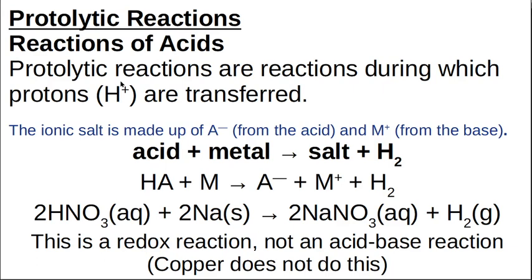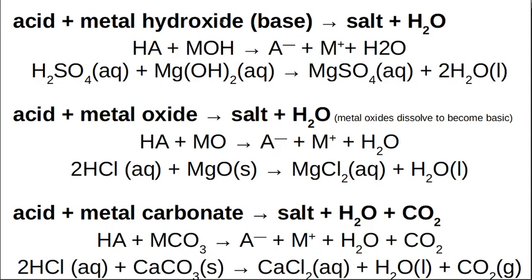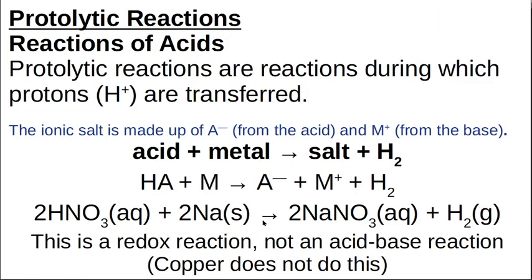These are the general reactions: an acid plus a metal gives you salt and hydrogen gas; an acid plus a metal hydroxide gives you a salt and water; an acid plus a metal oxide; acid plus a metal carbonate. These reactions have been discussed since grade nine, so you need to know how to form these. If they give you an acid and a metal, you need to know they're going to produce a salt and hydrogen gas, provided that they are reactive metals — copper, for instance, isn't reactive enough.